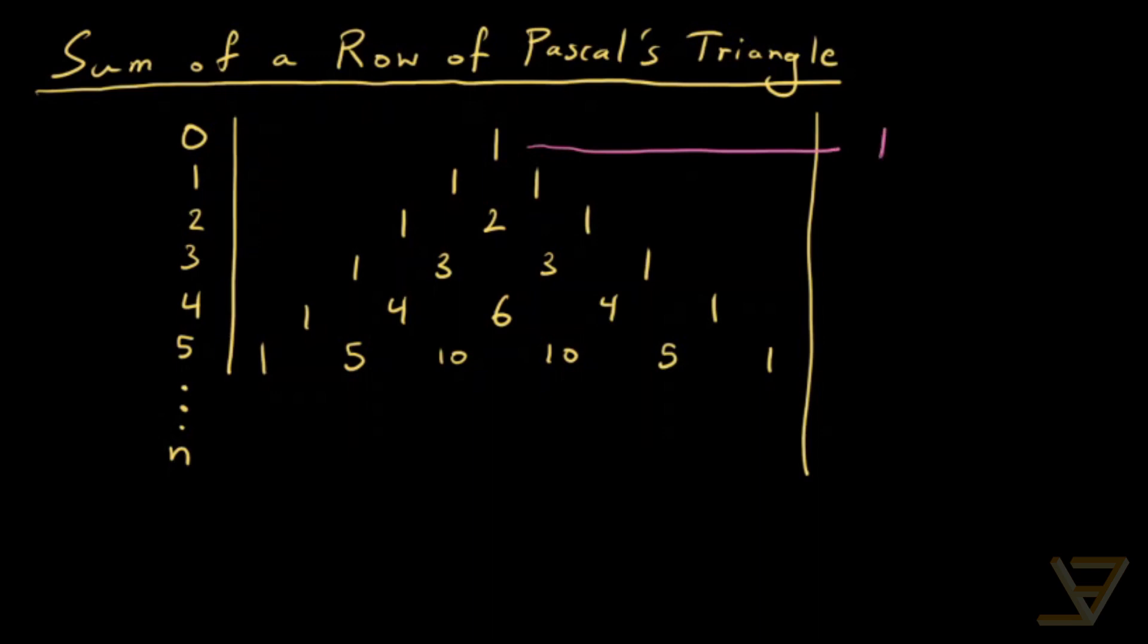So the sum of this row is just 1. The sum of this row is 2. The sum of this row is 1 plus 2 plus 1, which is 4. The sum of this row is 1 plus 3 plus 3 plus 1, which is 8. This row is 16, this row is 32, and in general it looks like the sum of row n is 2 to the power of n.